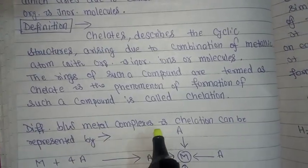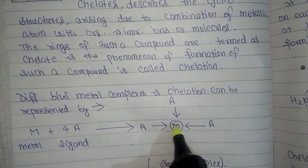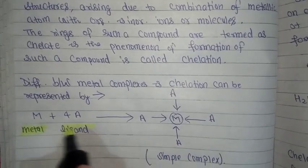What is the difference between complex and chelation? It can be represented by M plus 4A to give MA4. This is a simple complex. This is metal, this is ligand.